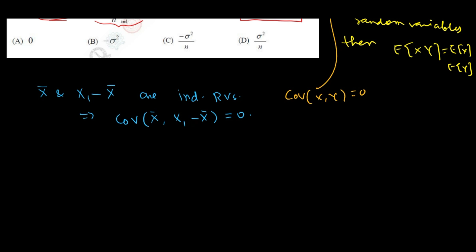So in general, there is a result that states that if x and y are two independent random variables, then you take any two Borel measurable functions,